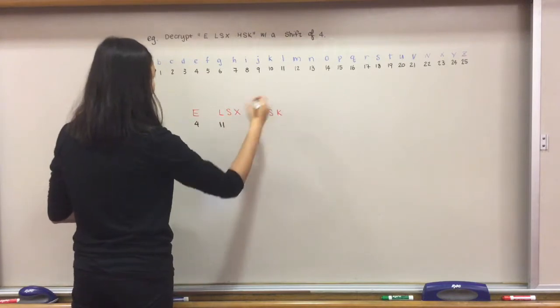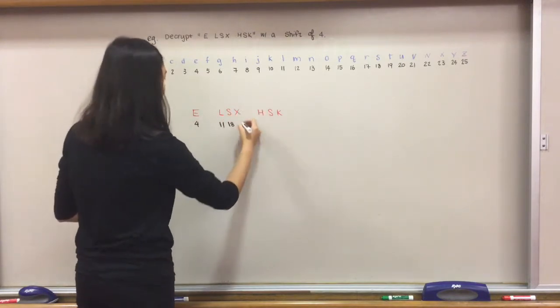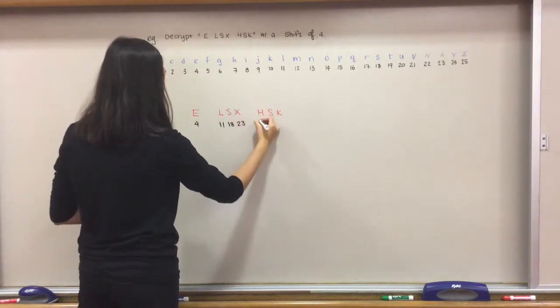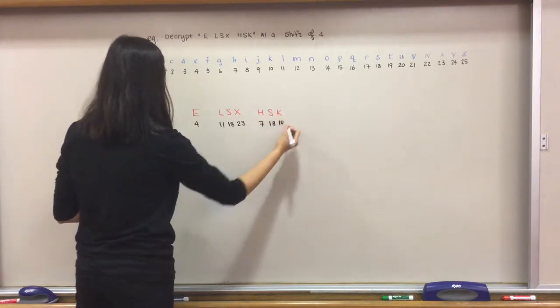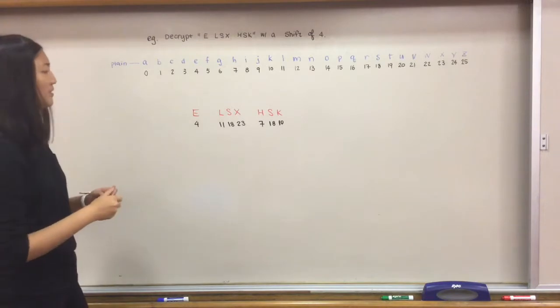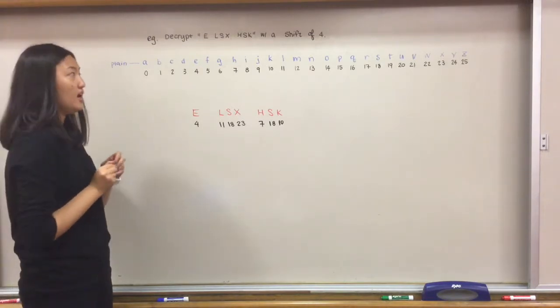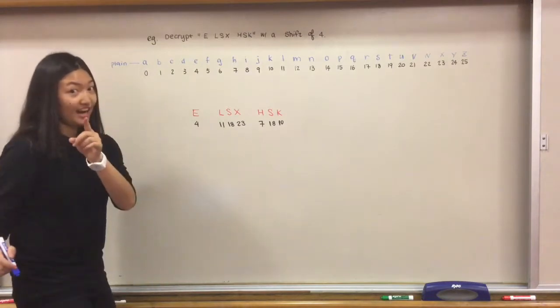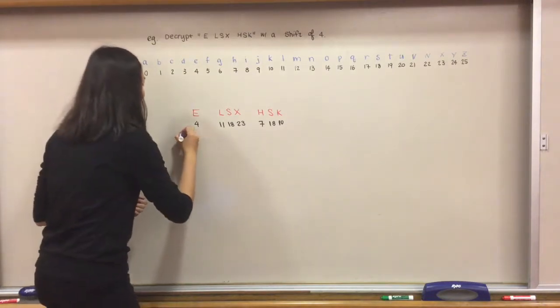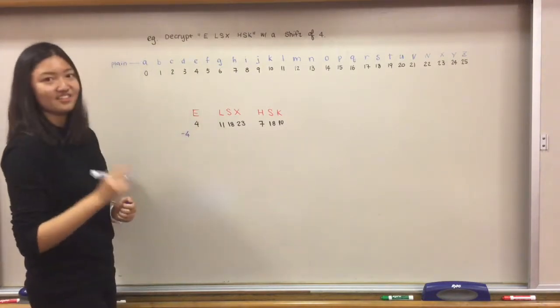Next step, because we are decrypting with a shift of 4, we need to subtract 4 from the numbers. Simple algebra again: 0, 7, 14, 19, 3, 14, 6.